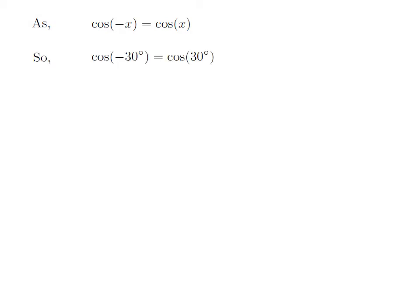Let us apply the above identity for cosine of minus 30 degrees. Here, x is 30 degrees. So, cosine of minus 30 degrees is equal to cosine of 30 degrees.